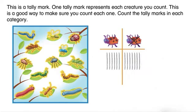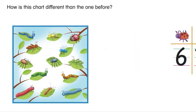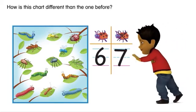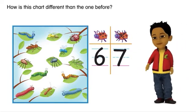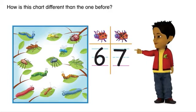Count the tally marks in each category. How is this chart different than the one before?